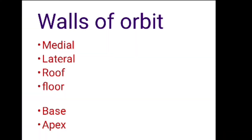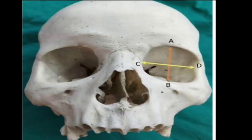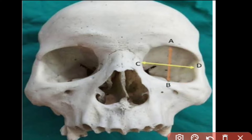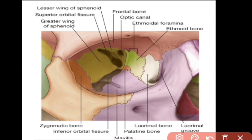The orbit has four walls: medial wall, lateral wall, roof, and floor. The whole bony margin is called the orbital margin or the base of the orbit. Posteriorly, we have what is known as the apex of the orbit.